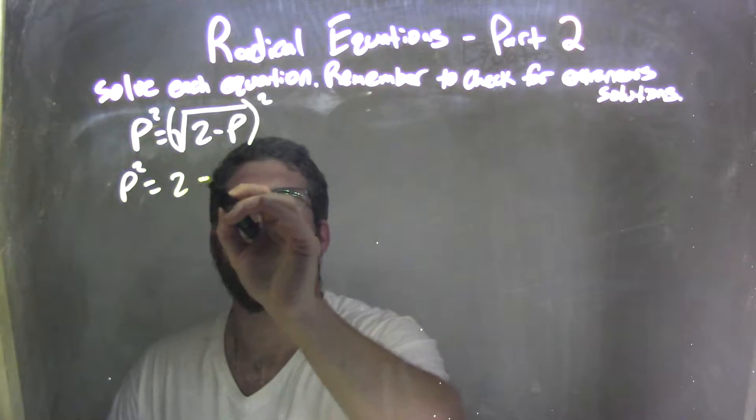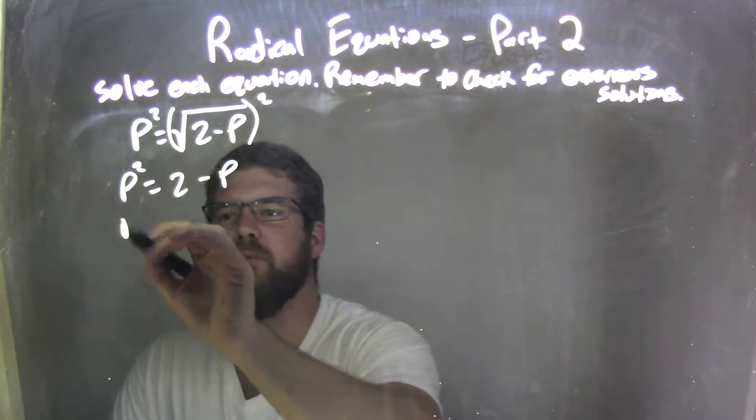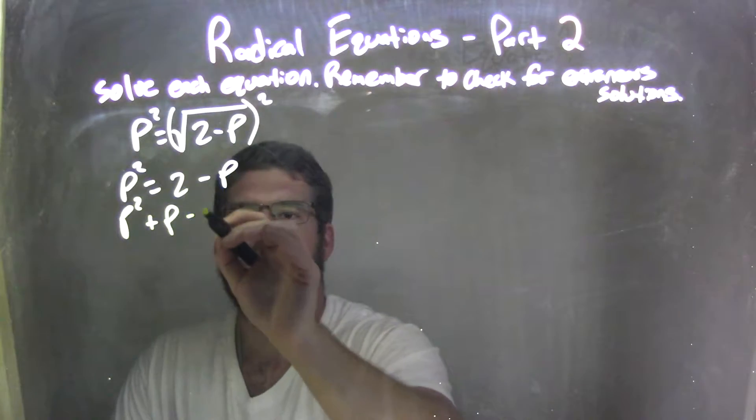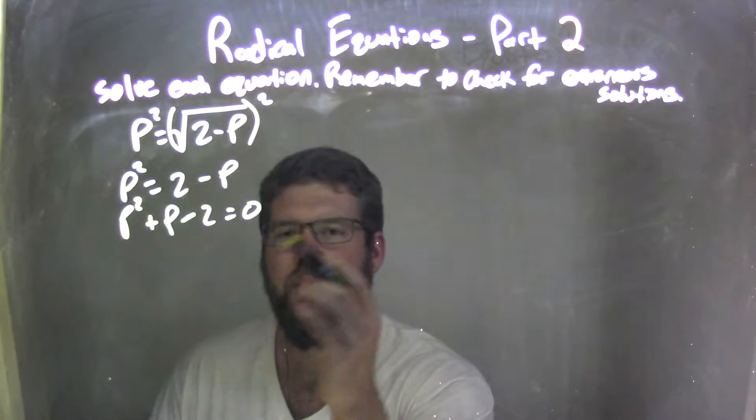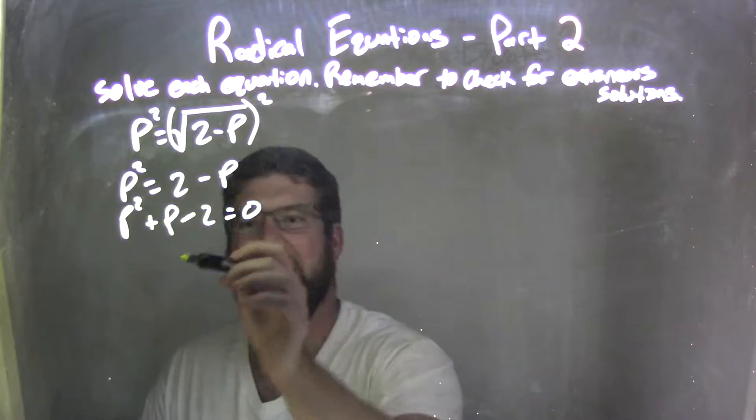And that equals 2 minus p on the right. Now I'm going to bring everything over to the left and set it equal to 0. So we have p squared. By adding a p, I have a plus p to this side, and I subtract 2 minus 2 equals 0. I'm kind of skipping some steps here, so if you need your time you can write it all out, but I'm just subtracting 2 over and adding a p.